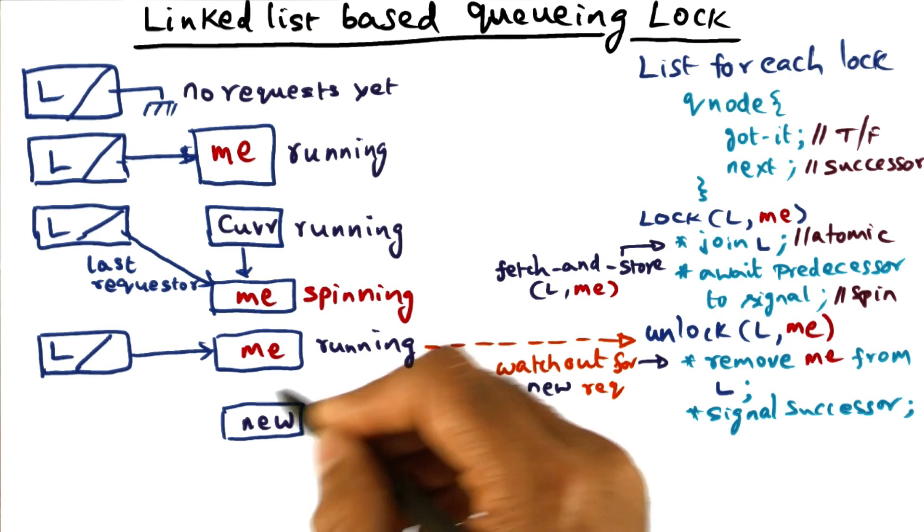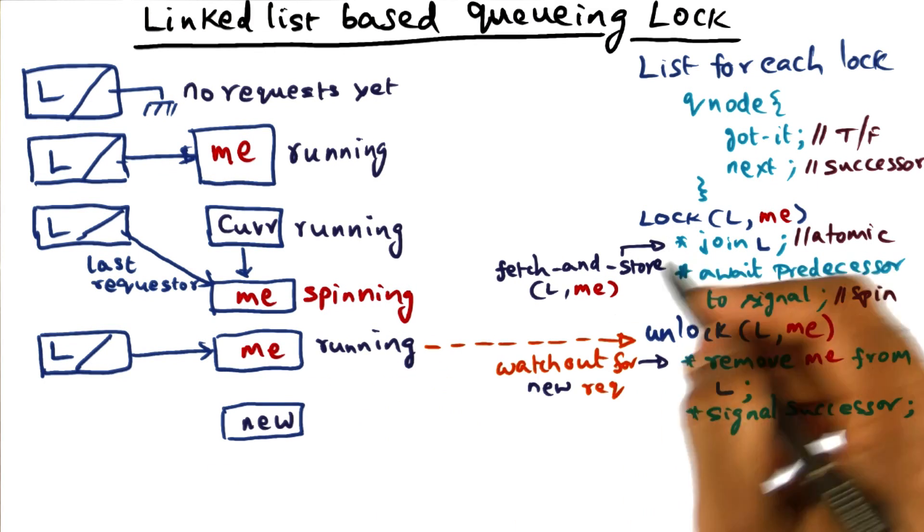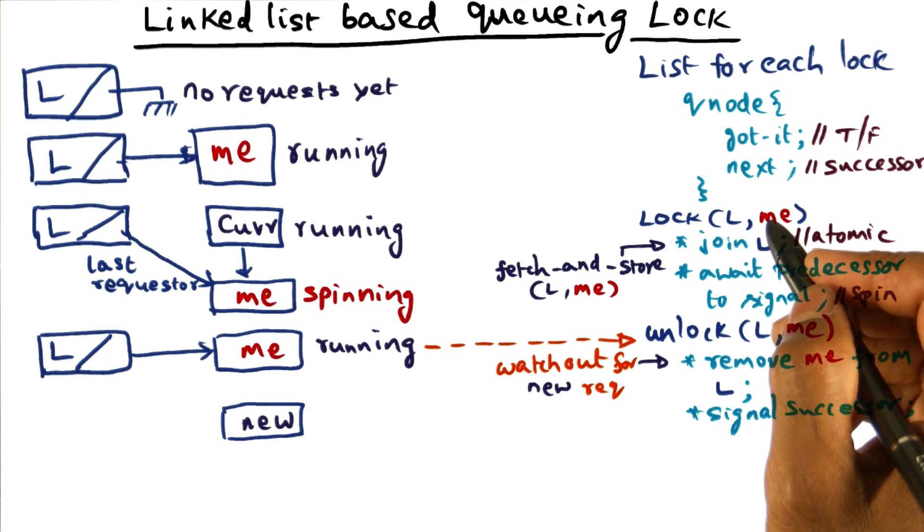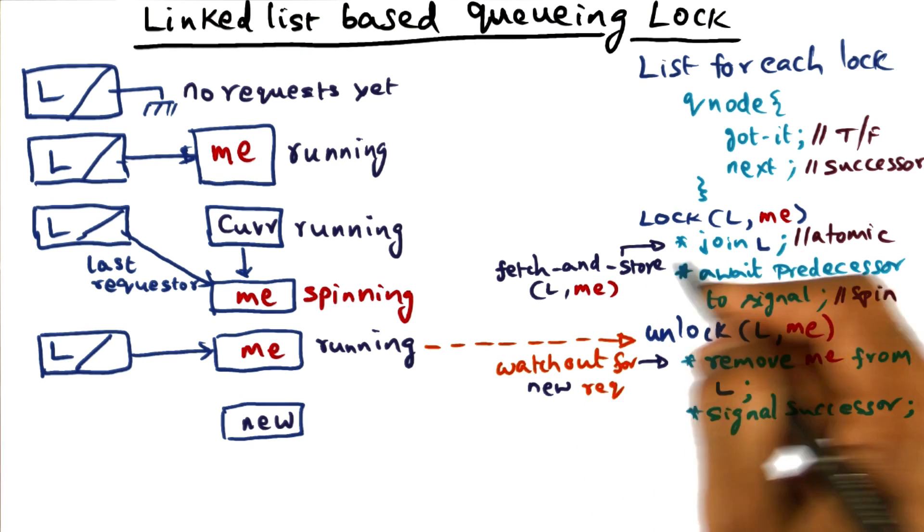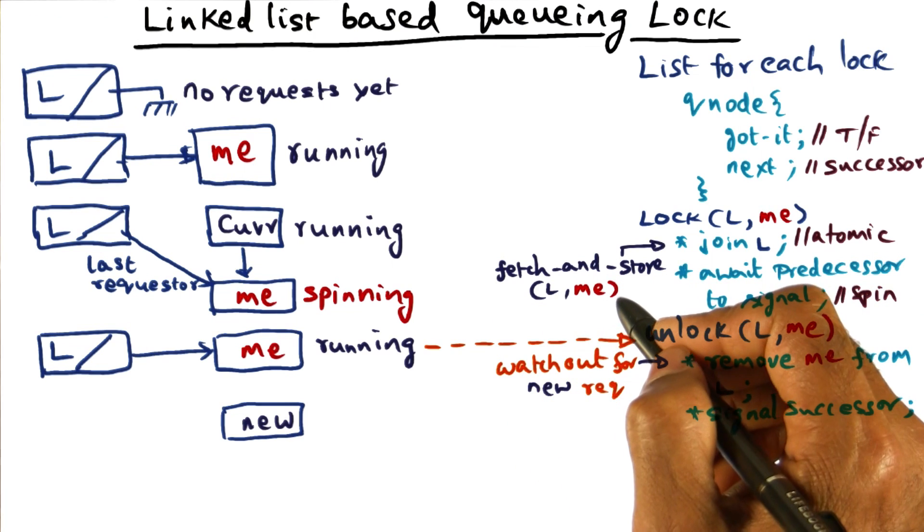So if there was a new request that is forming, you know that the new request would have called this lock algorithm. And if you had called this lock algorithm, and he has actually executed this fetch and store operation...